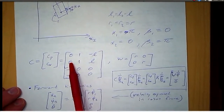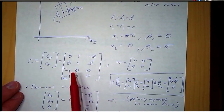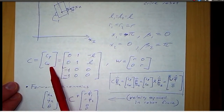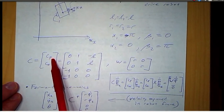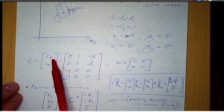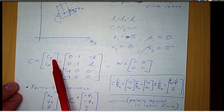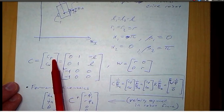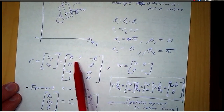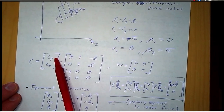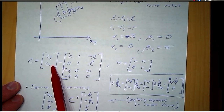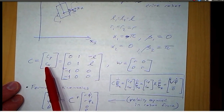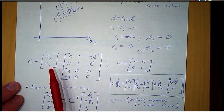We can go ahead and fill in the C matrix. Here it is in two blocks, Cp and Cn. Cp contains the coefficients from the wheel constraints governing motion in the wheel plane direction — in other words, the rolling constraint equations. Cn contains the coefficients from the constraints relating motion in the direction normal to the wheel plane, or the no-sliding constraint.